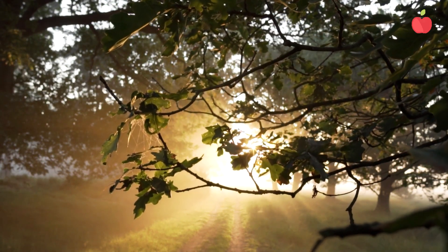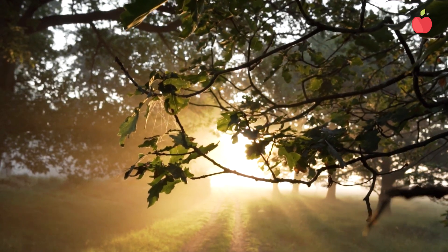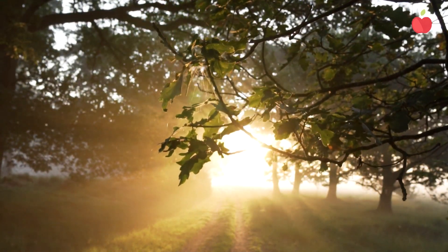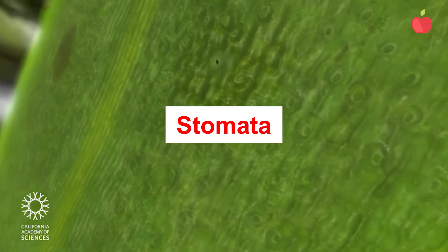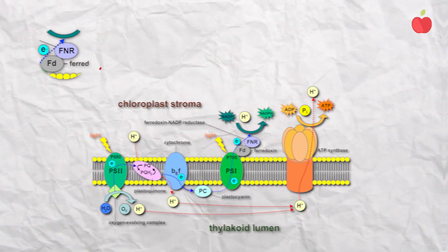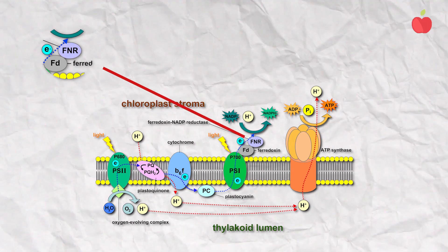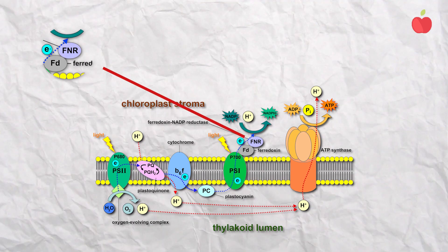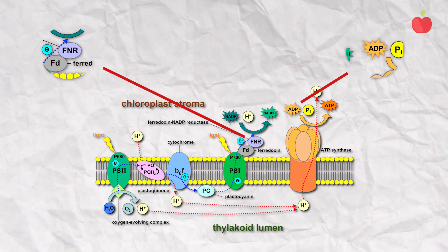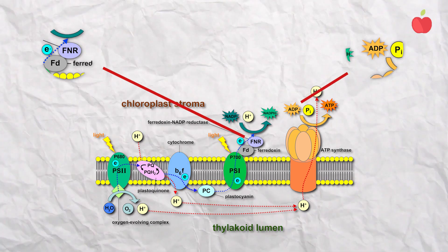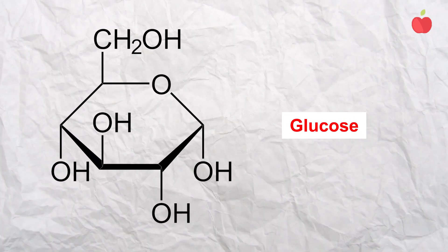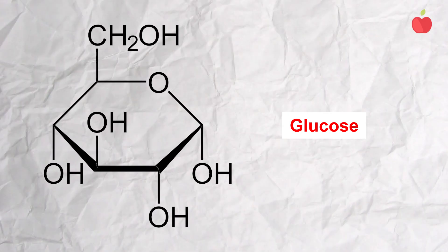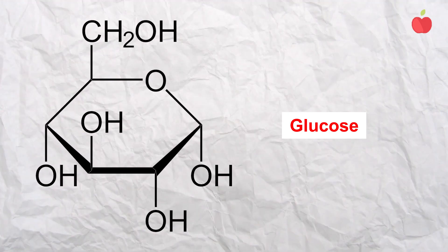These are energy-rich molecules. Now we move on to the next phase. Like the name suggests, light independent reactions take place whether there is light or not. Plants take in carbon dioxide through tiny openings in their leaves called stomata. CO2 then diffuses into the stroma of the chloroplast. This is where the plant makes sugars. The chloroplasts use ATP and NADPH, created in the light dependent phase, to do some chemistry. Carbon and oxygen in CO2 is combined with more carbon molecules to create glucose and other sugars.